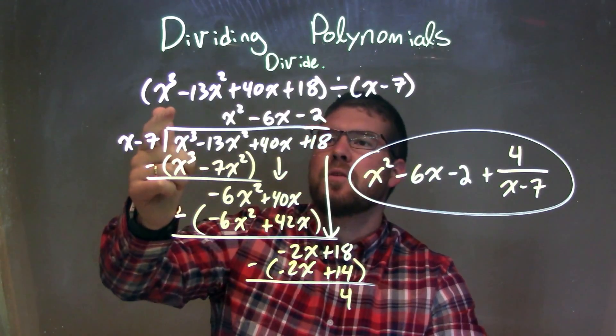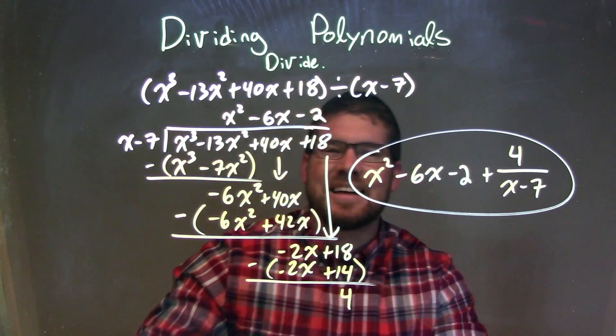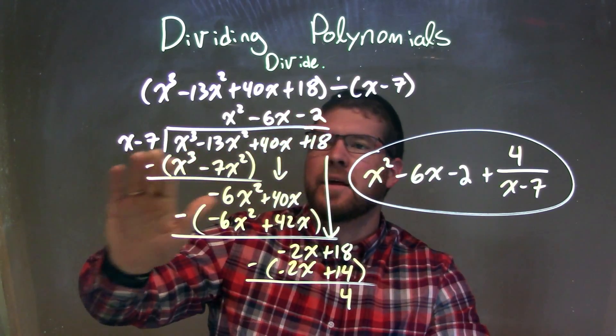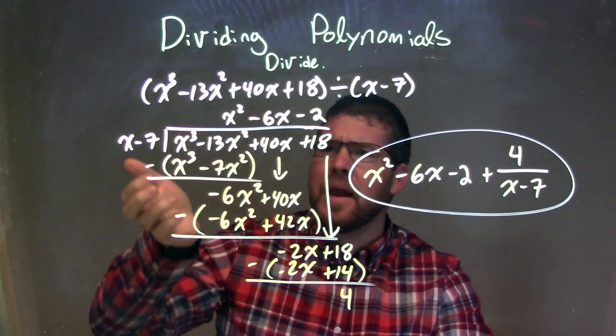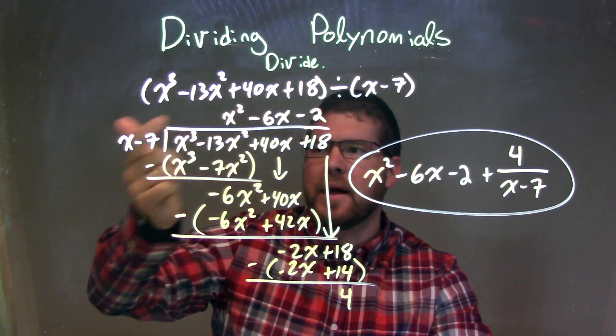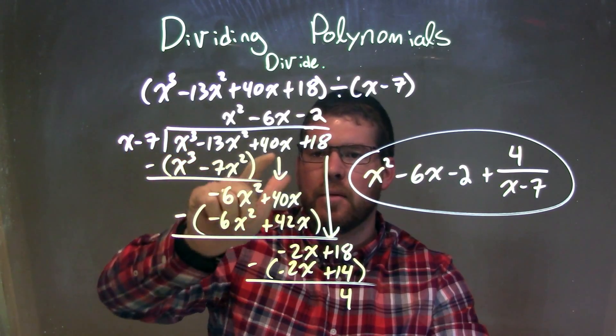So let's recap. We're given x to the third minus 13x squared plus 40x plus 18 divided by x minus 7. I take it and write it as long division: my divisor goes into my dividend. And then ask the question: what times x gives me x to the third? That's x squared. Multiply x squared to both parts here, subtract it, I got a minus 6x squared and brought down the 40x.